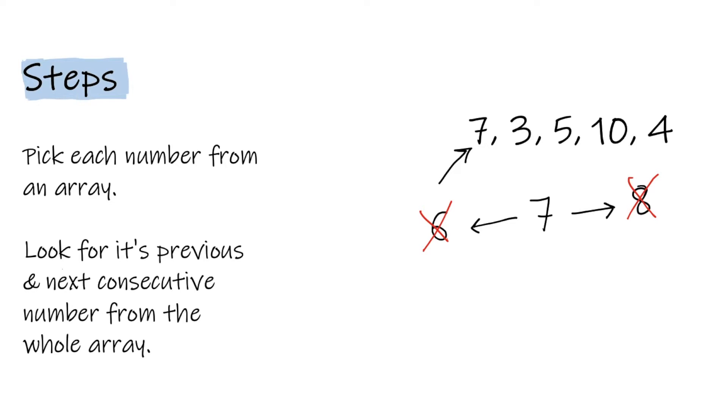So 7 cannot be part of any consecutive subsequence for this array, and the longest subsequence count till now is 1, which is 7 itself.